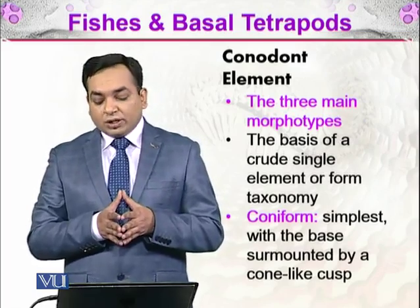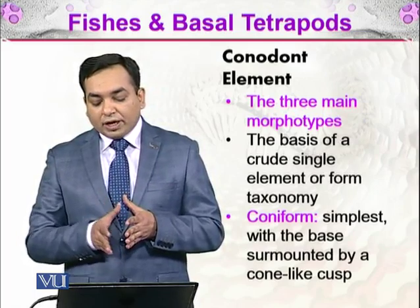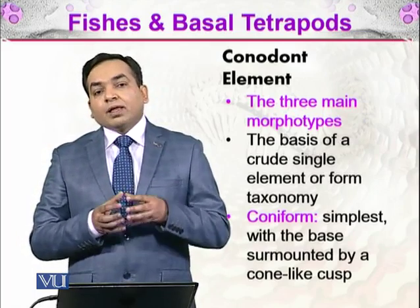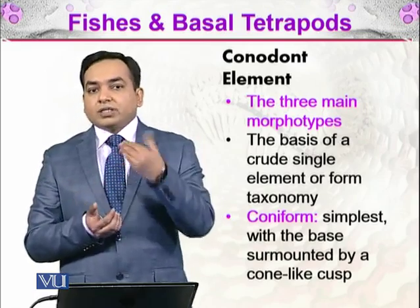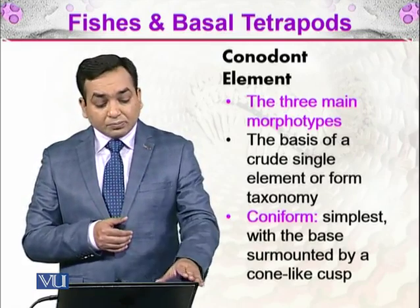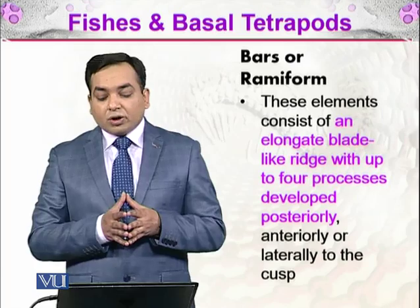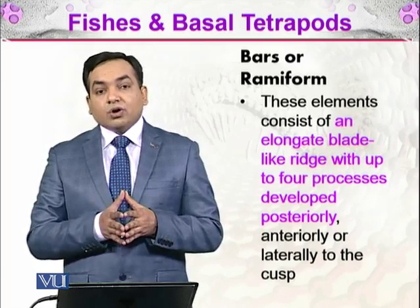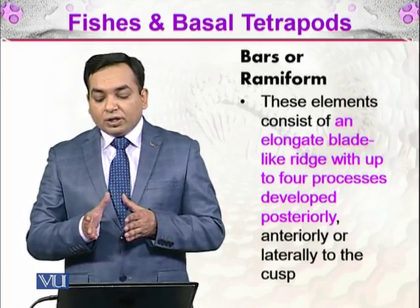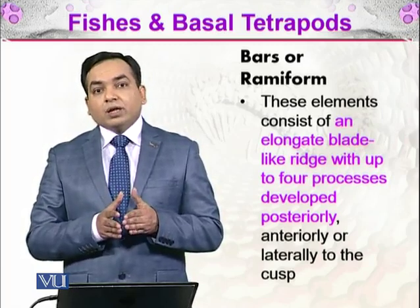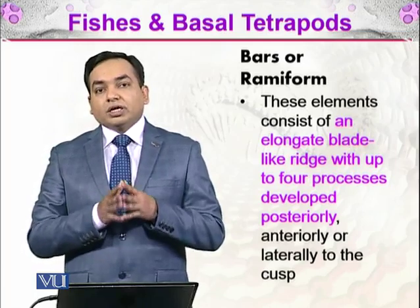The first type is the coniform — it is the simplest, with a base surmounted by a cone-like cusp. Then there are the bars, or ramiform. These elements consist of an elongated blade-like ridge with up to four processes developed posteriorly, anteriorly, or laterally to the cusp.